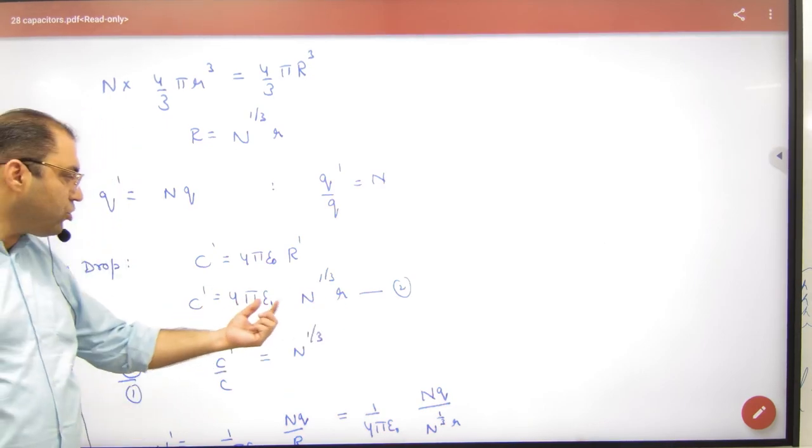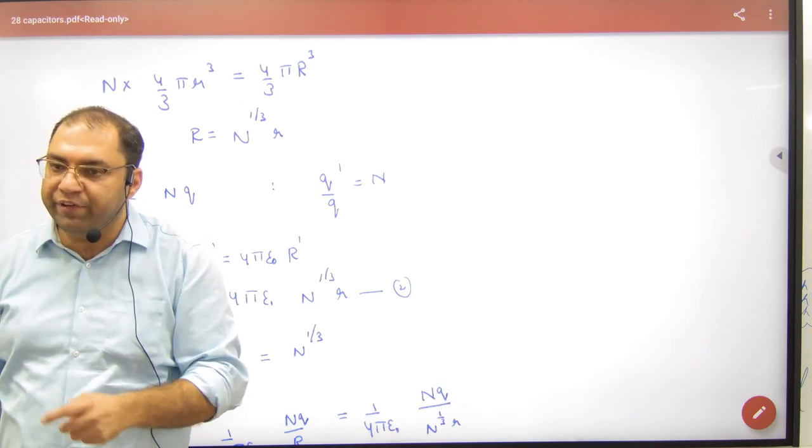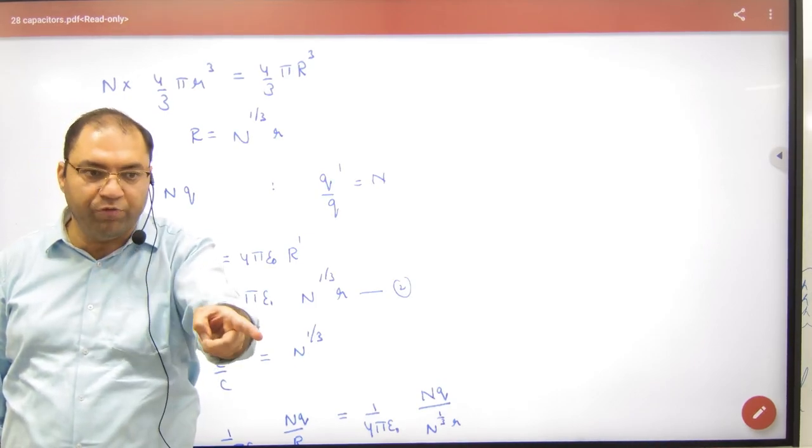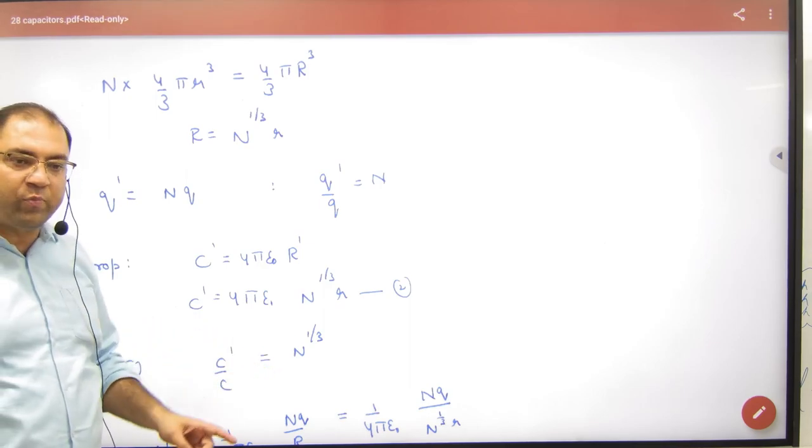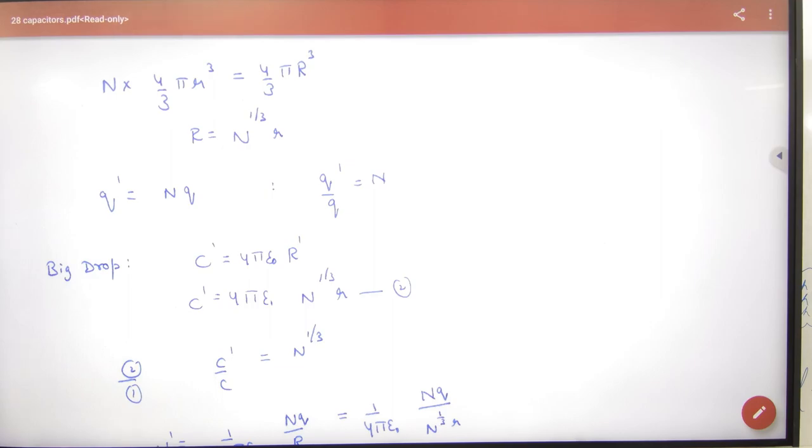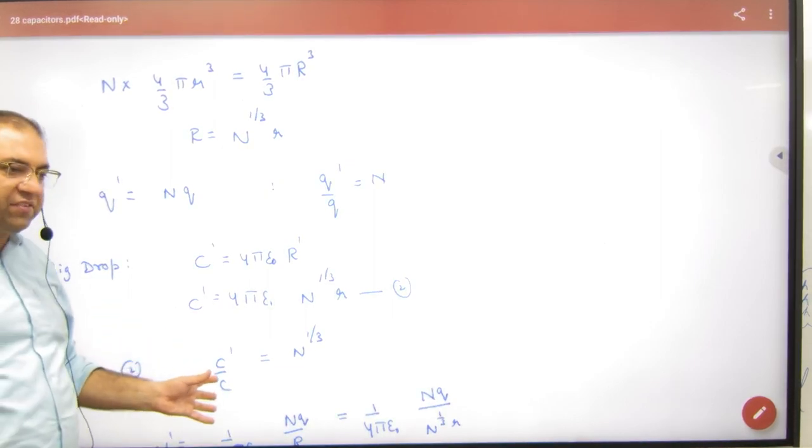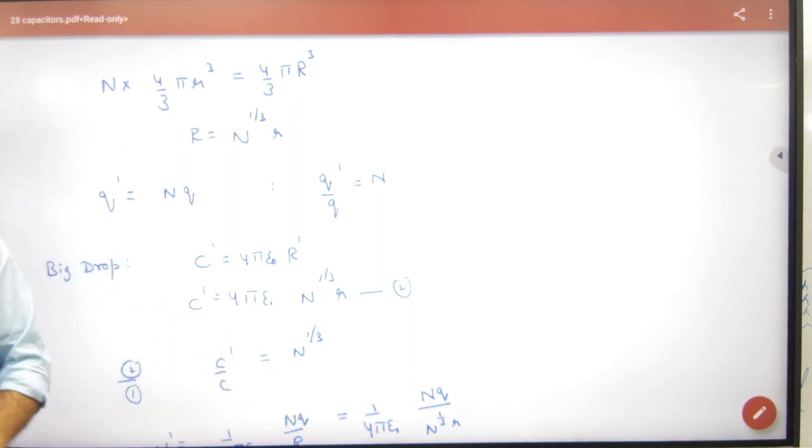C by C ratio: n raised to power 1/3. Today you have a formula note: V' is n power 2/3 into V. Another formula note: C' is equal to n raised to power 1/3 into C. That when drops combine, n new capacitance n^(1/3) into pure capacitance, formula 1/3.